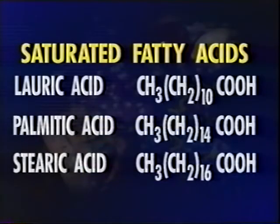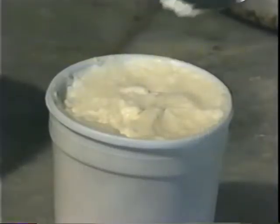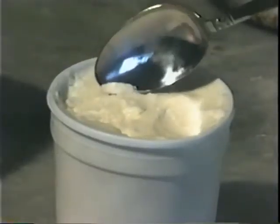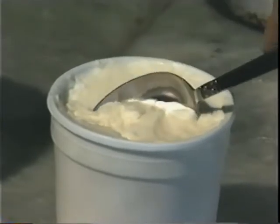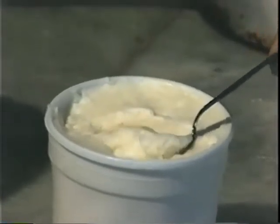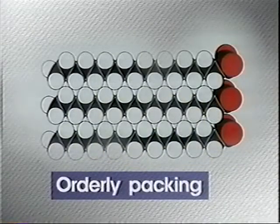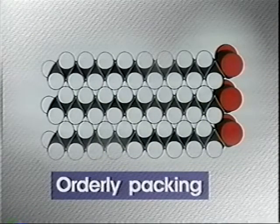Animal fats contain predominantly saturated fatty acids such as palmitic acid and stearic acid. They are usually solid at room temperature, or at least melt at higher temperatures than vegetable oils. This is because the fatty acid sidechains easily pack into orderly arrangements.